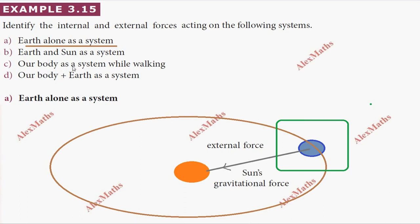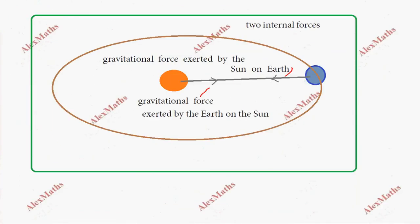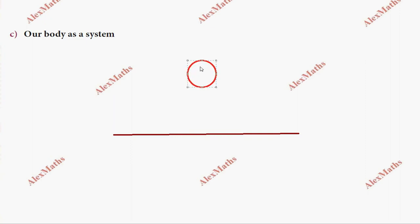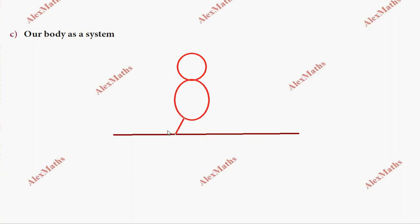Our body as a system while walking. Now, the earth is the surface. This is a rough diagram. The human body is the system.